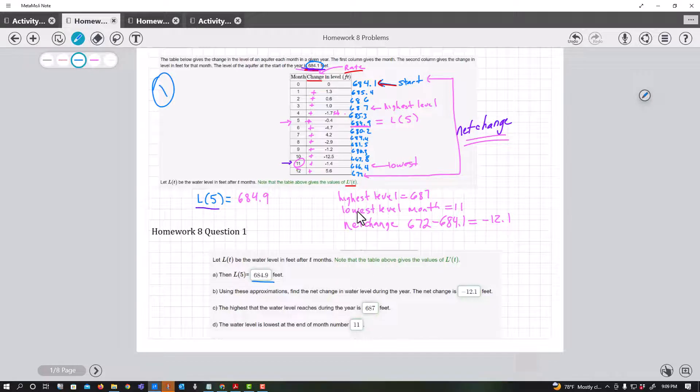Then it says the net change for the year. So the net change would be found by taking the ending minus the starting, so that's that value right there. The highest water level, I just look for the highest, which is 687. And then the lowest, which is this value, happens in this month. So once again, this looks complicated, but once you figure out you're just doing net change based on adding or subtracting.